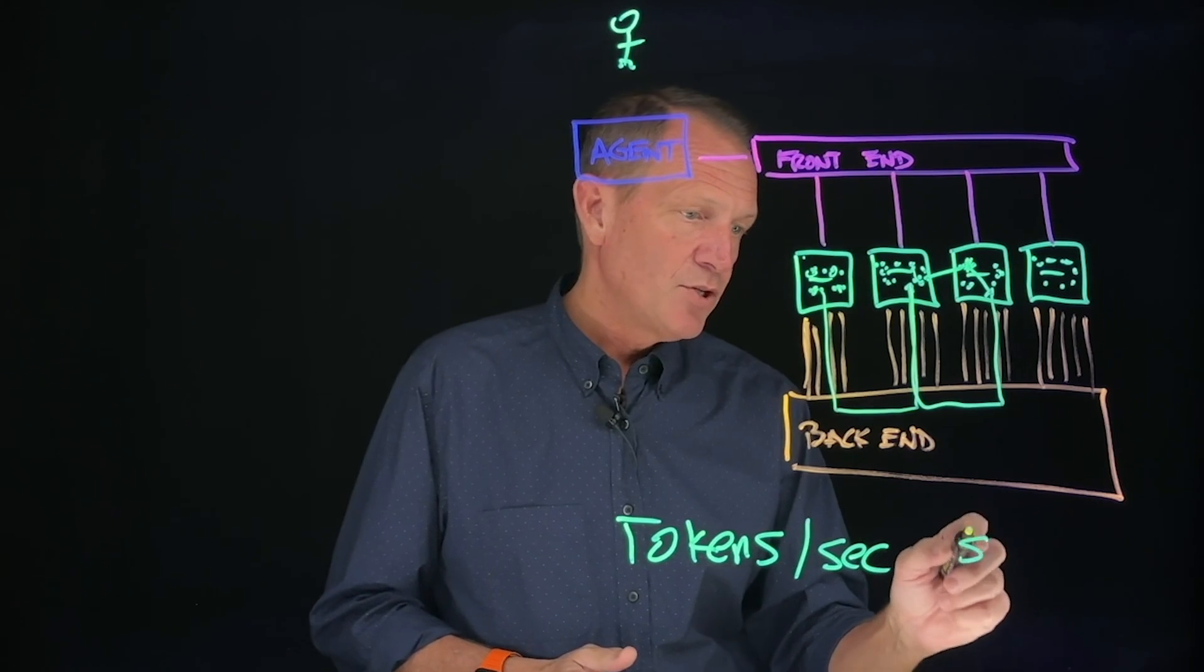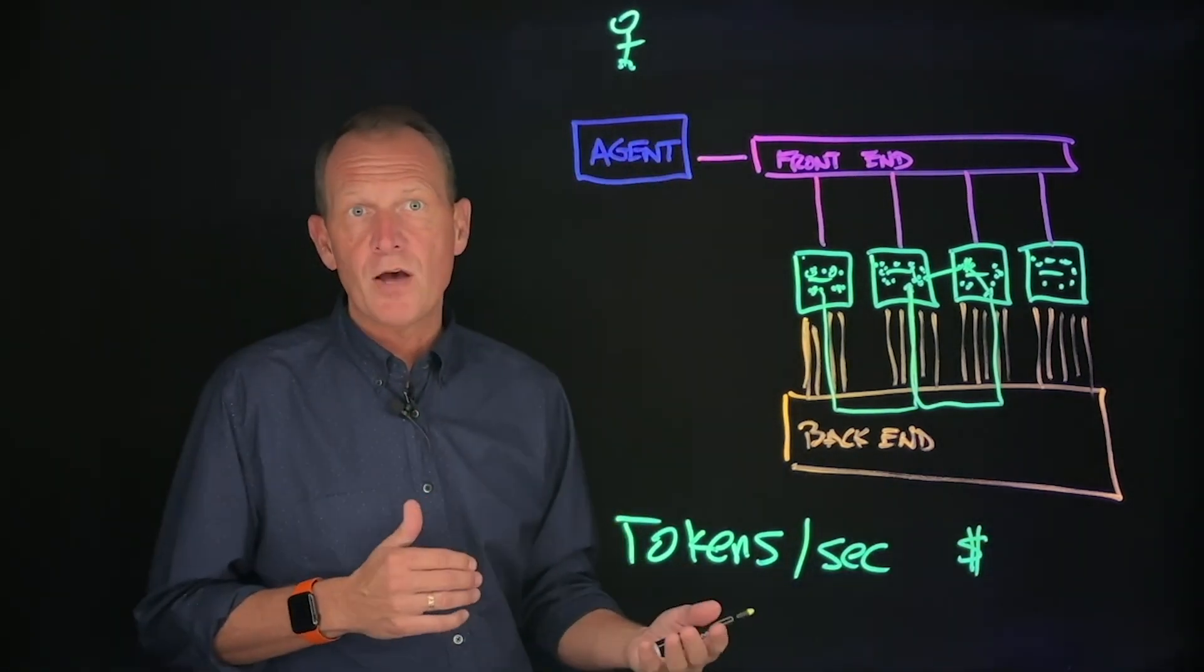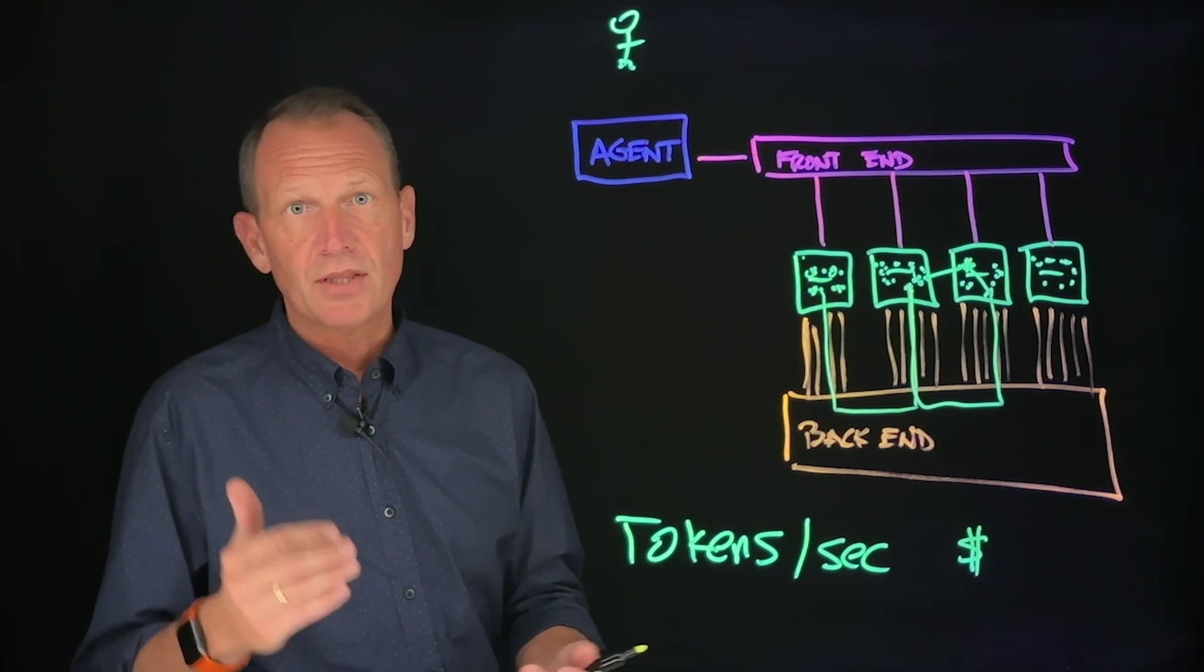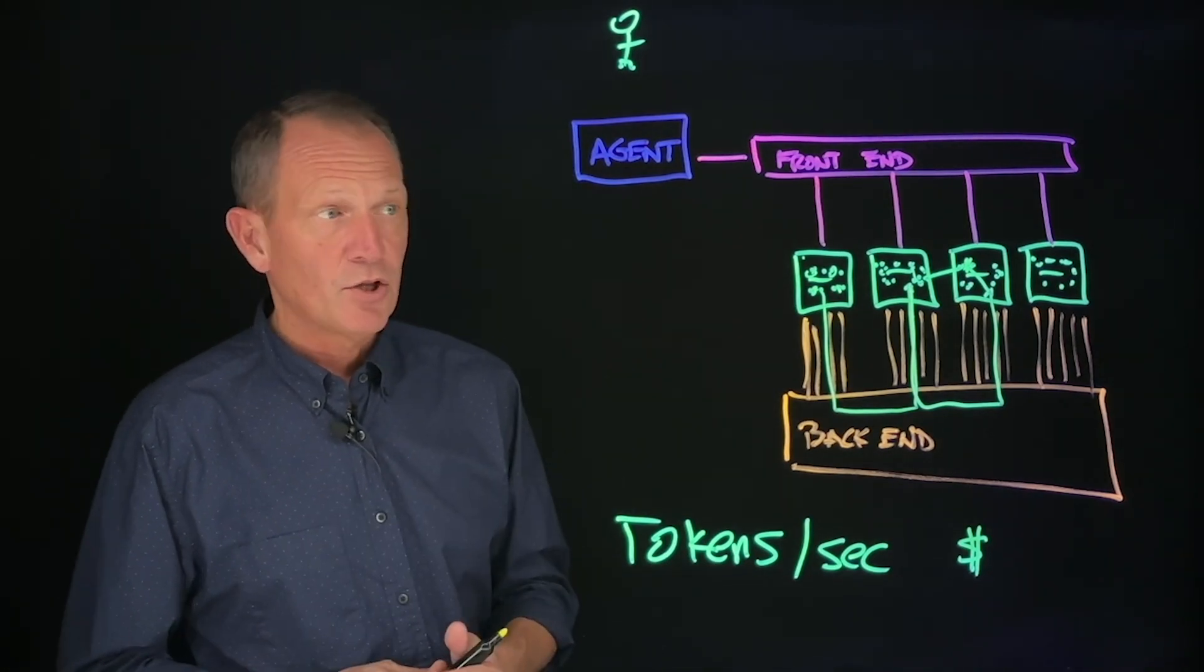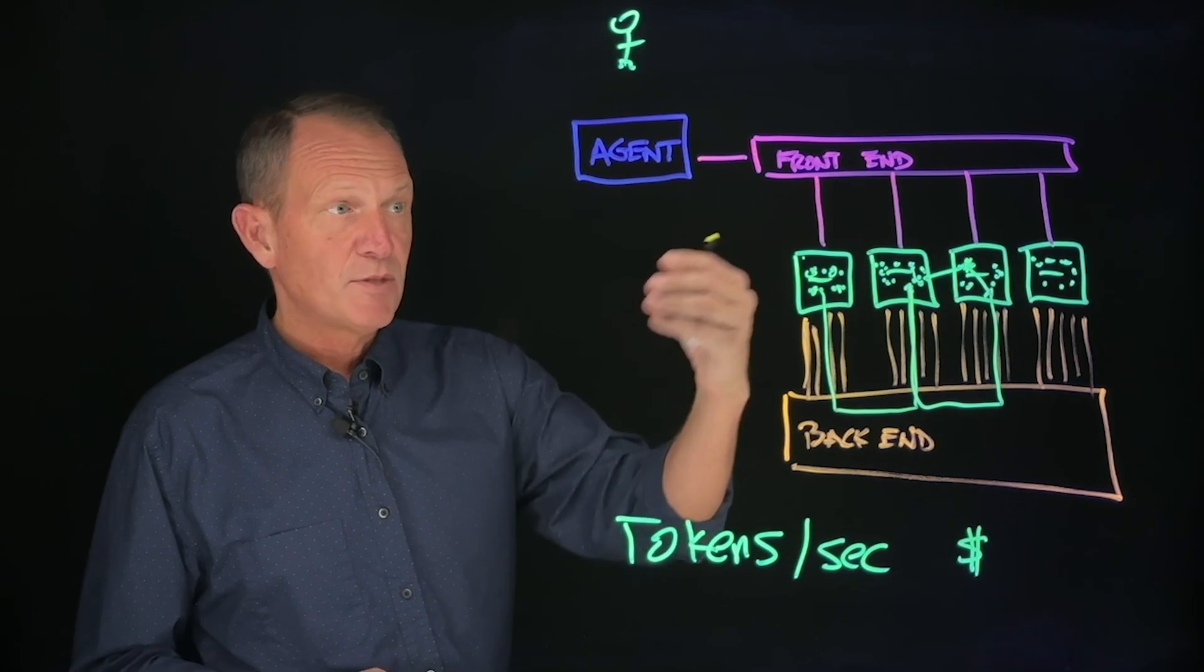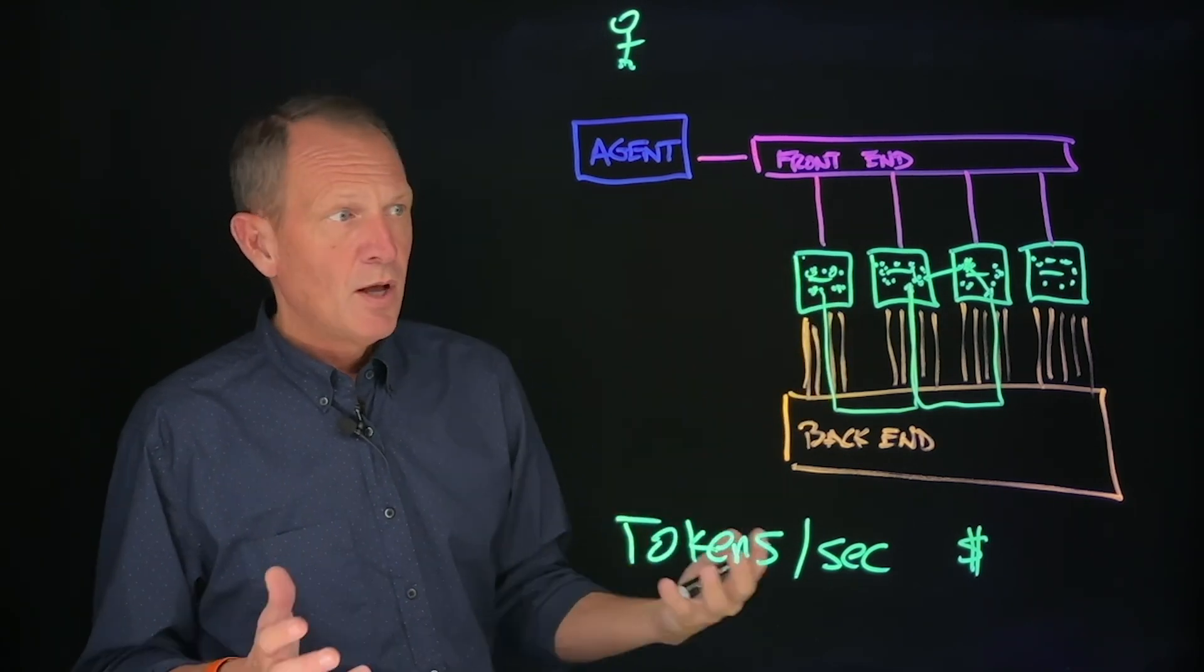So tokens per second for a given amount of money is a metric that the industry uses to determine how performant a particular architecture, how performant a particular GPU or node, integrated node, that they are. If you remember before, I mentioned that there are other vendors in addition to the NVIDIAs and the AMDs and the Intels of the world that are producing inference-only chips.